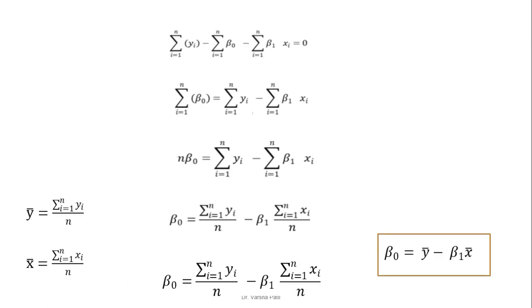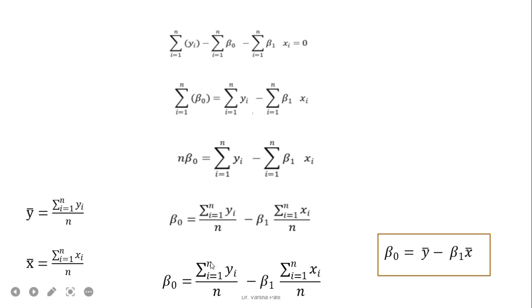First, we take the partial derivative with respect to beta0 and equate to zero. The factor of 2 and minus 1 go to the right-hand side and cancel. You can pause the video and check each step — each step has been given in detail. When we arrange the equation, keeping beta0 on the left-hand side, since beta0 is a constant, we get n times beta0 on the left. After arranging, since the summation of yi divided by n is y-bar, and the corresponding term is x-bar, we get: beta0 equal to y-bar minus beta1 times x-bar.